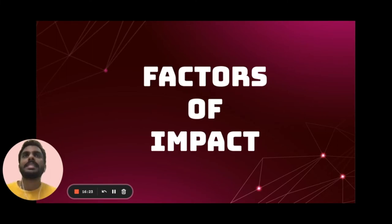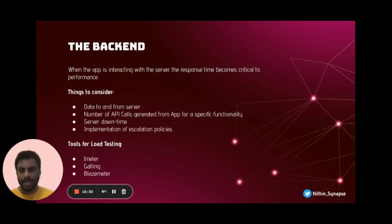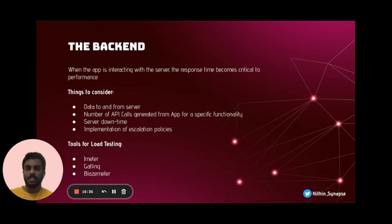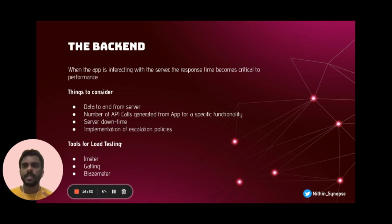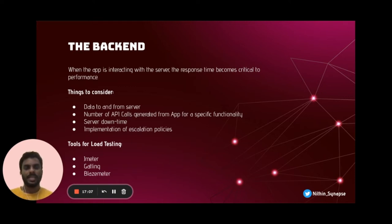There are three important factors when it comes to performance of mobile applications. The first one is the backend. When the app is interacting with the server, the response time becomes critical because the front-end calls something from the back-end and literally waits for its response. Things we need to consider are data to and from the server, number of API calls, server downtimes, and implementation of escalation policies and fallback mechanisms. Tools used for testing the backend include JMeter, Gatling, and BlazeMeter.